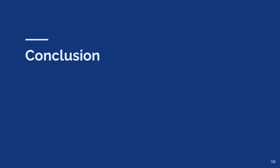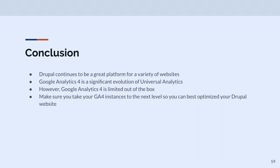I think I'm about on time. Conclusion: Drupal is a pretty good platform — we're all here because it's very useful in a lot of cases. GA4 is a significant evolution of UA, but limited out of the box. You need to do a little extra work to make sure you're actually tracking stuff, particularly in Drupal. That embedded media thing — I was really annoyed when I found that out. But I hope these tips and tricks will help out for you all.